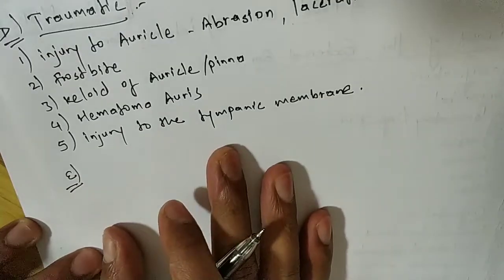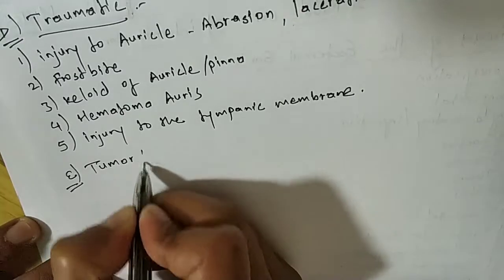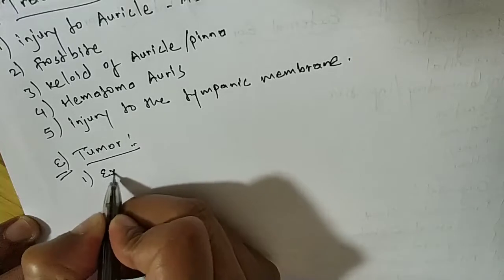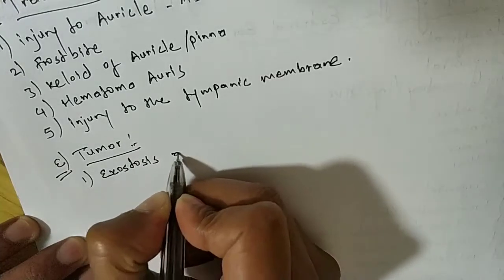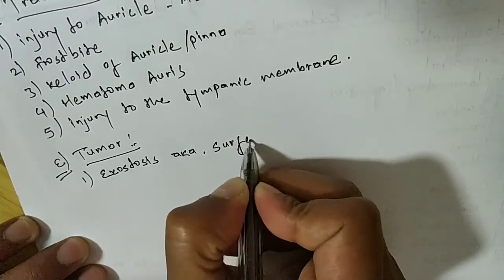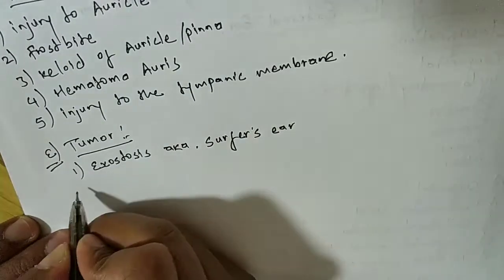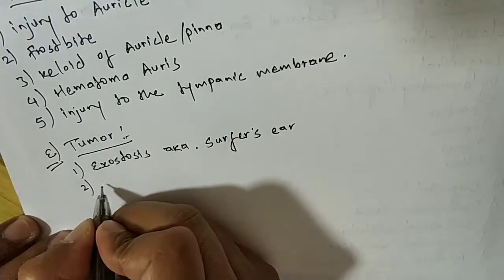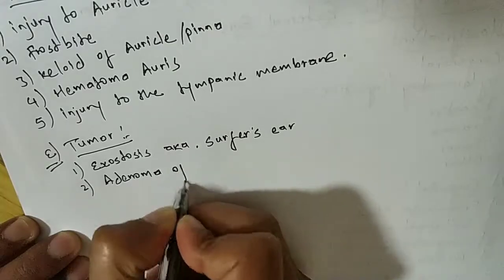The fifth category is tumour. Under tumour comes: first, exostosis — also known as surfer's ear, which mainly occurs in surfers who dive in the sea; and second, adenoma of the external canal.